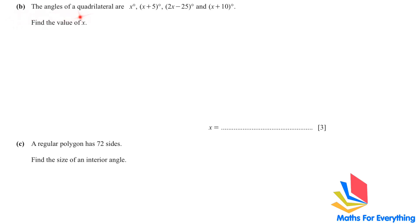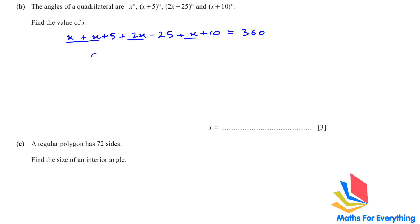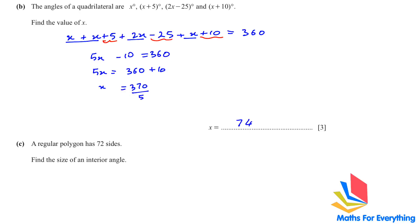Part B: the angles of a quadrilateral are given — four angles. Find the value of x. In a quadrilateral, the interior angles add up to 360. Adding the like terms: 2x plus 2x plus 1 gives 5x, and the constants 5 minus 25 plus 10 give negative 10, so 5x minus 10 equals 360. Therefore 5x equals 370, divided by 5 gives x equals 74.